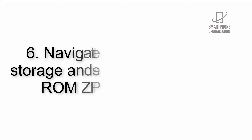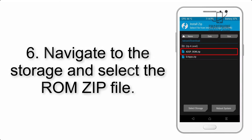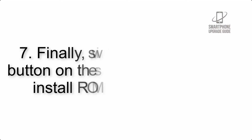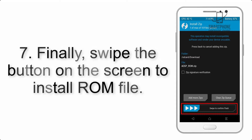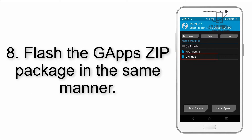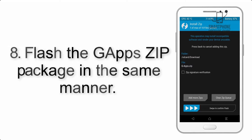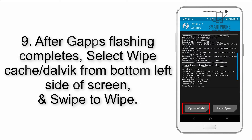Step 5: Go back to the recovery main screen and tap on the Install button. Step 6: Navigate to the storage and select the ROM zip file. Step 7: Swipe the button on the screen to install the ROM file. Step 8: Flash the G apps zip package in the same manner.